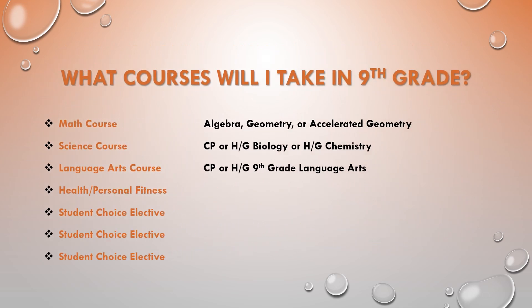Summarizing what we've covered so far — what courses will you take in the ninth grade? You will take a math course: algebra, geometry, or accelerated geometry, with the recommendation coming from your math teacher. You will take a science course — most students will take biology, some will take honors gifted chemistry — with that recommendation coming from your science teacher. You will take ninth grade language arts, with your level recommendation coming from your language arts teacher. All students take health and personal fitness, and then three student-choice electives.